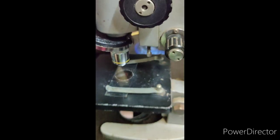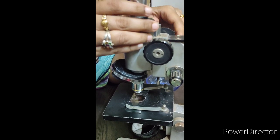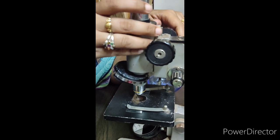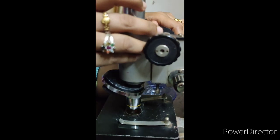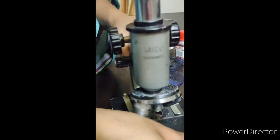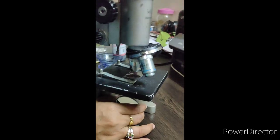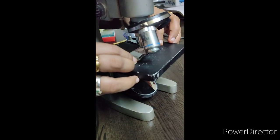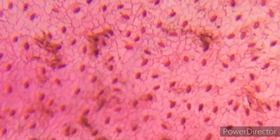Then, with the help of the coarse adjustment knob, I am moving the lens closer to the specimen. You should adjust the light that is coming towards the microscope for this. And, see whether the slide is placed in the correct place. Quite a number of stomatas here.